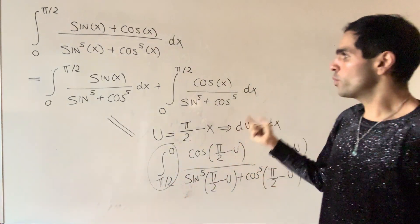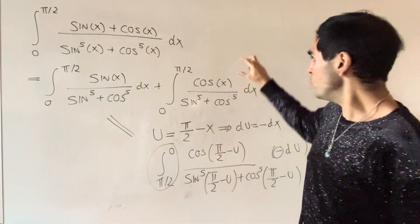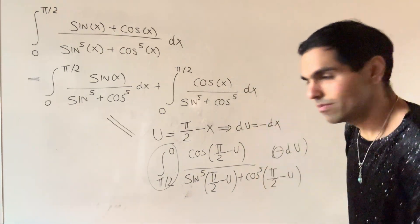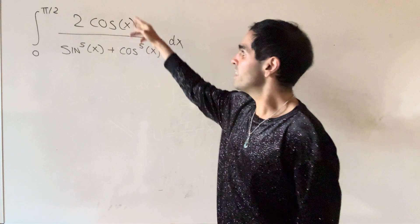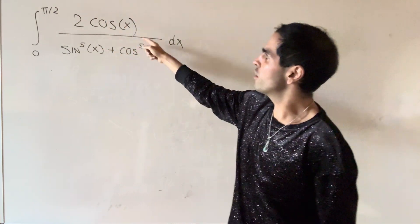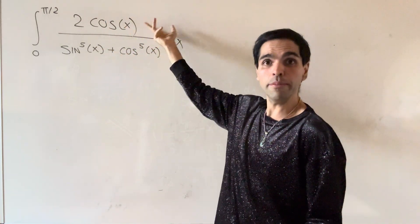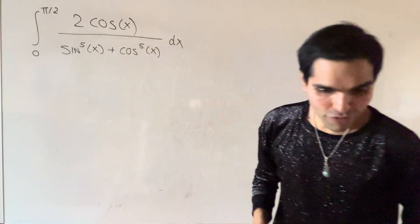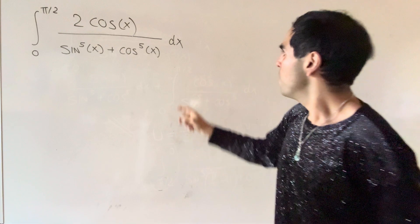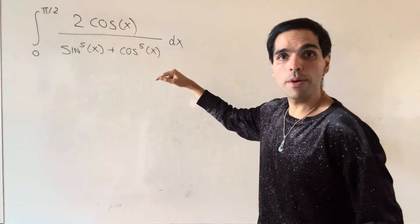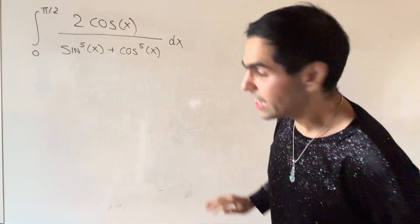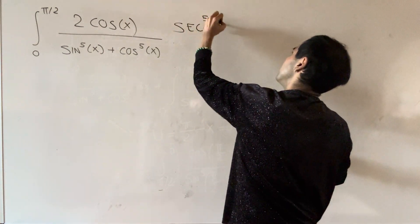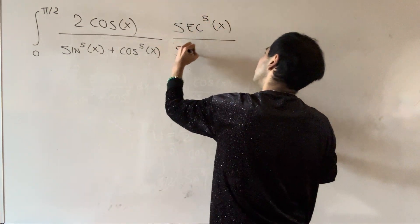So in the end, what we have to do is just evaluate two times the second integral. Now let's really evaluate the integral from zero to pi over two of two times just the cosine term. What we'd like to do is simplify this by multiplying top and bottom by secant to the fifth power.